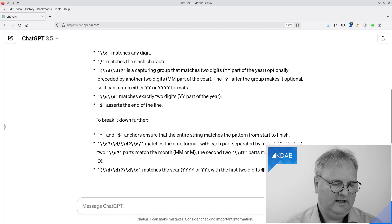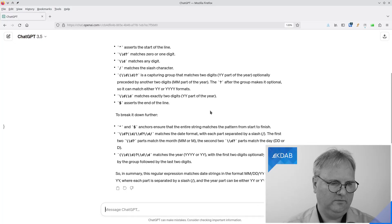ChatGPT says this regular expression is used to match date formats in the form month-month, date-date. That's why I prefer ISO dates because is it month-month, date-date or is it date-date, month-month? You guys over there in the US would say it's this, and in Denmark at least, I would say it's date-date, month-month. All those confusions.